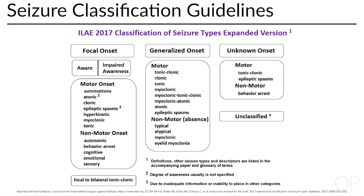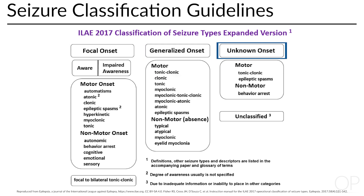In 2017, the International League Against Epilepsy updated the seizure classification guidelines, which use the onset of seizure as a first step in the operational classification of seizure type. This is why it is very important to gather information about how the seizure starts. According to the guidelines, seizures can be classified as focal, generalized, or unknown in onset. They can be further described based on what the seizure looks like.